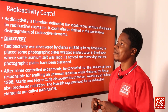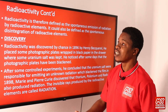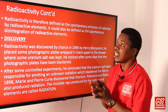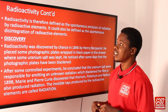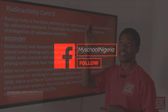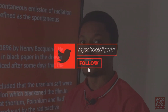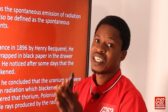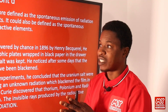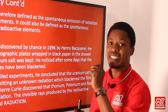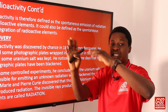Radioactivity can be defined as the spontaneous emission of radiation by radioactive elements, which continues until a stable stage is attained. Not all elements undergo radiation. For example, calcium has an atomic mass of 40 and atomic number of 20, meaning it has 20 protons and 20 neutrons — so it is stable and will not undergo radioactivity.